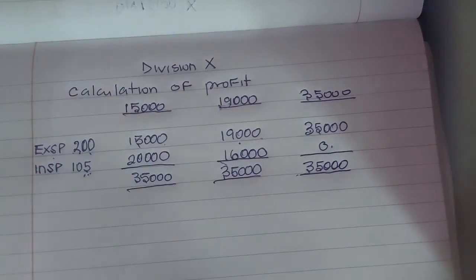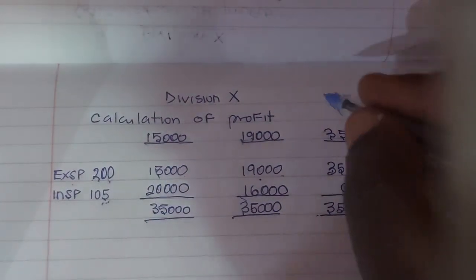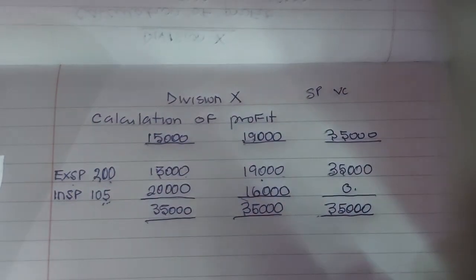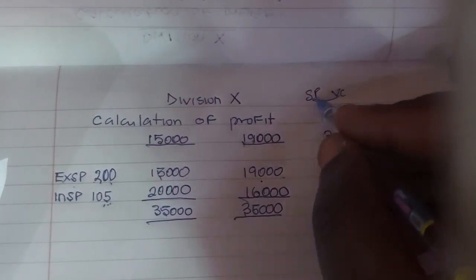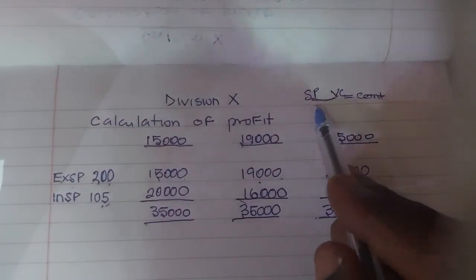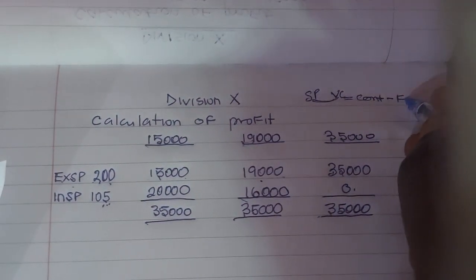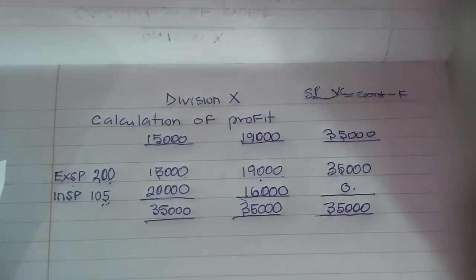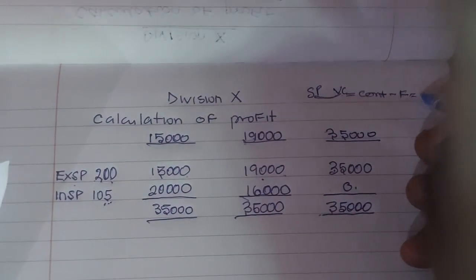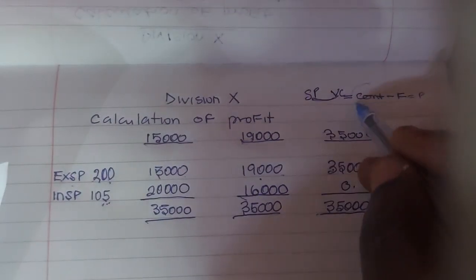To calculate the profits: when a question gives you selling price and variable cost per unit, a good student will subtract these two to give you contribution. Then minus the total fixed cost will give you your profits. Let's look at the contribution now. When you have selling price per unit minus variable cost per unit, you get contribution.